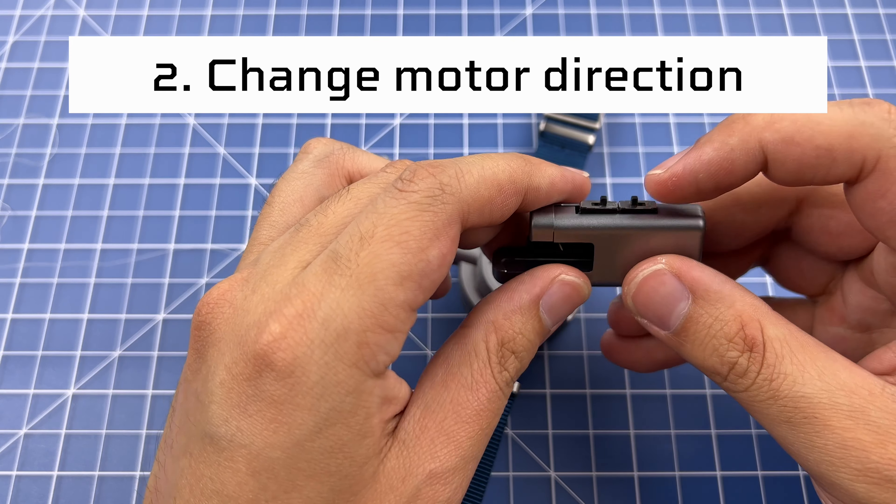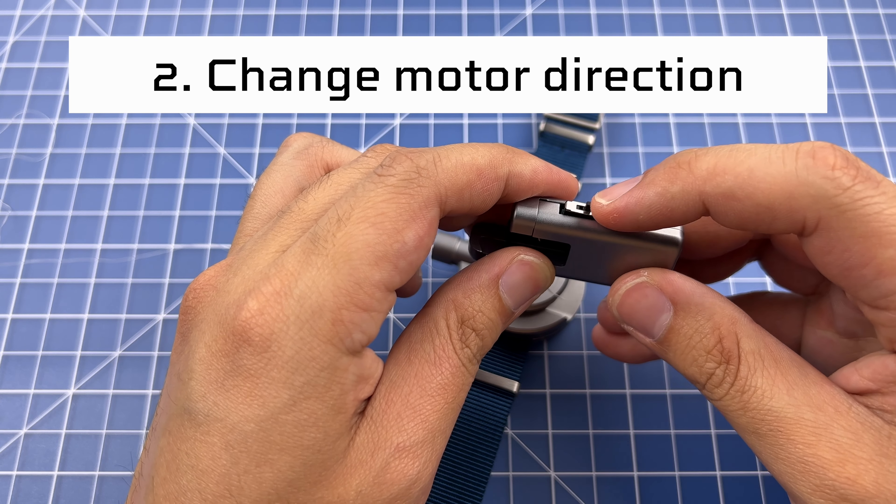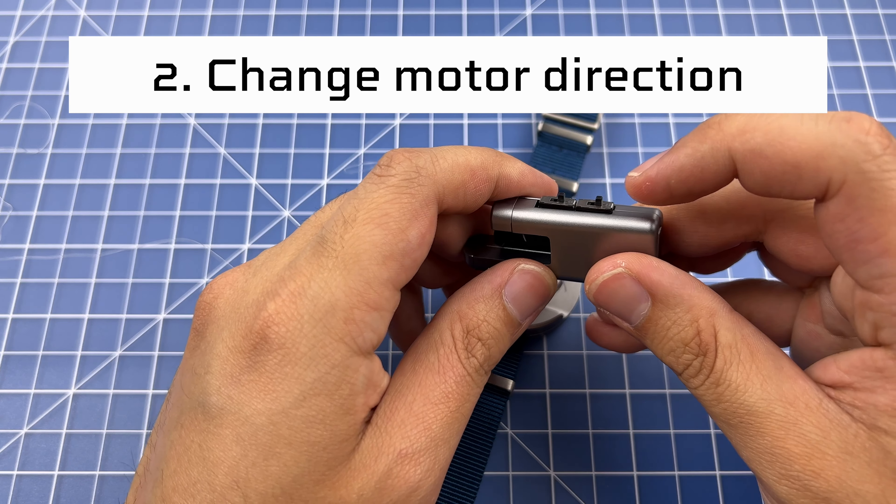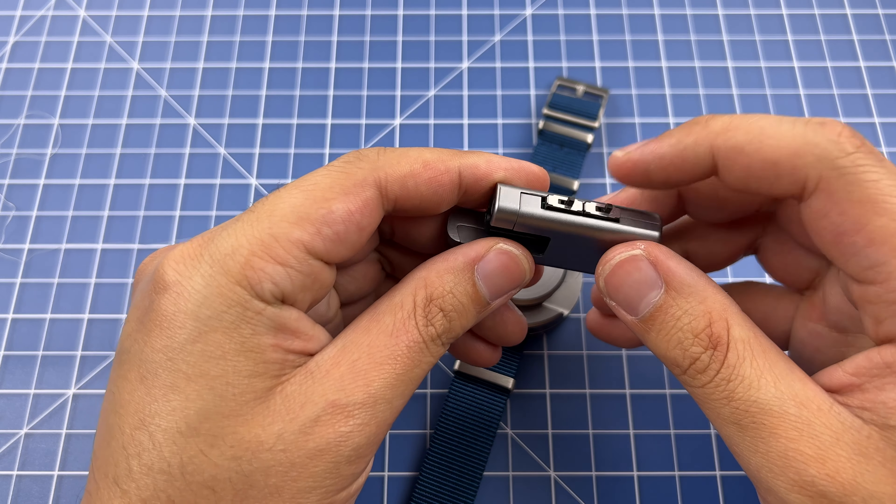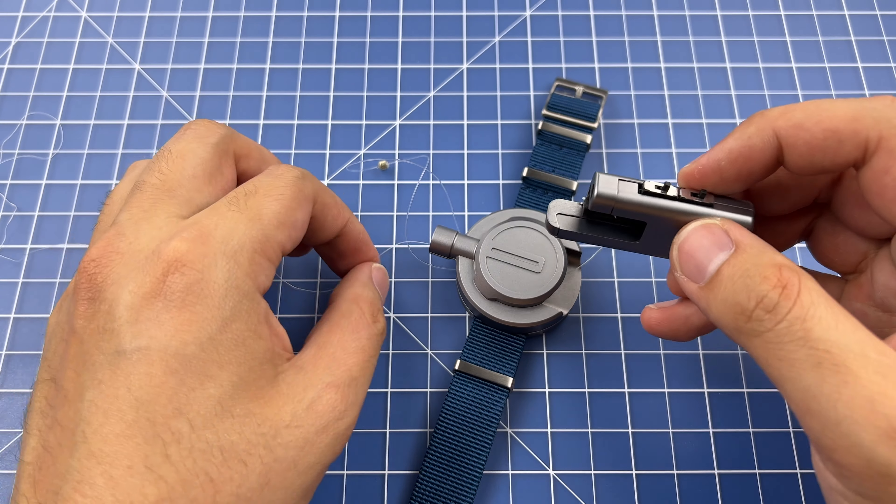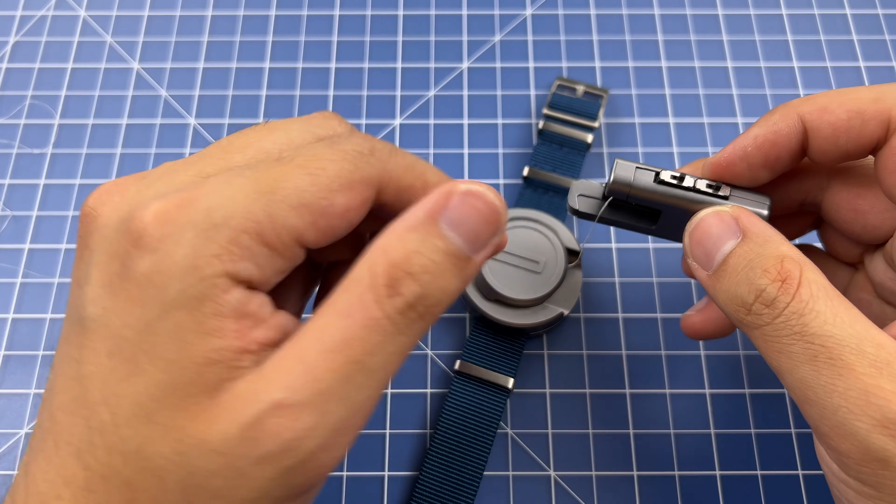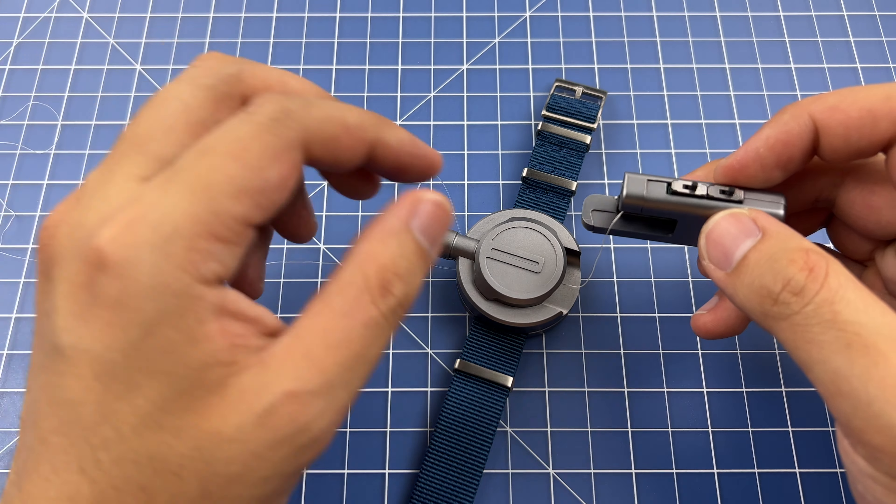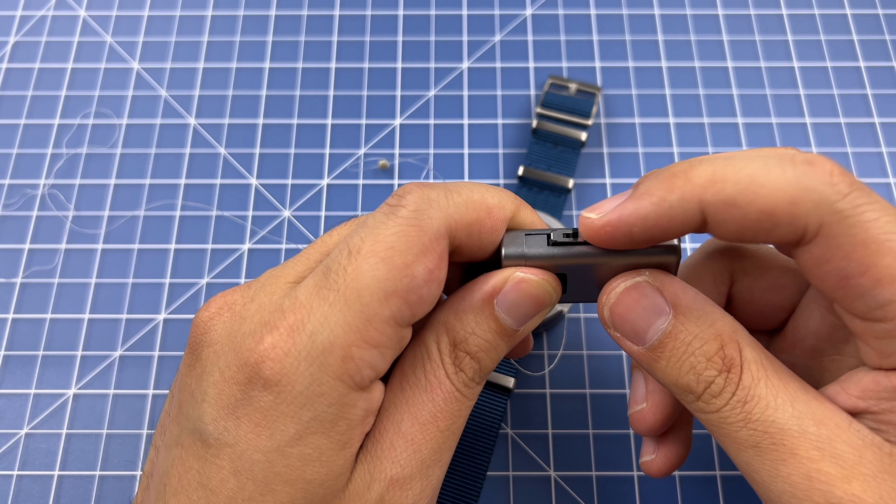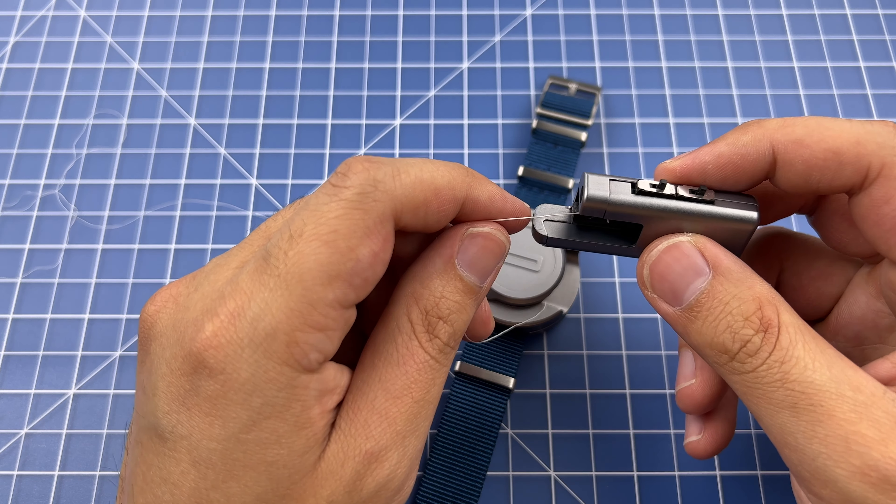After spooling out all of the thread, you want to change the direction of the motor reloading with the bottom switch. Just put it in the position that it wasn't in before. This changes the direction of rotation of the motor, which makes sure the line doesn't twist as you keep on shooting. If you don't change the direction, the line will eventually twist, tangle, and knot upon itself.